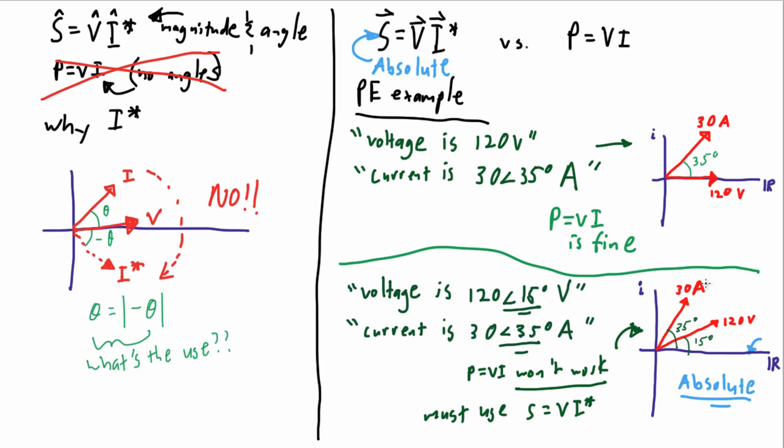While the P equals VI formula begins in a relative scenario, a scenario assuming voltage to be the reference. Which means that the conjugate in that circumstance accomplishes nothing, as we've already shown.